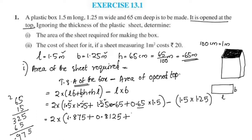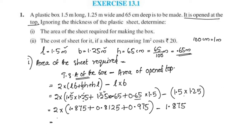Computing each term: LB = 1.5 × 1.25 = 1.875. BH = 1.25 × 0.65 = 0.8125. HL = 0.65 × 1.5 = 0.975. So the expression becomes 2 times (1.875 + 0.8125 + 0.975), minus 1.875.